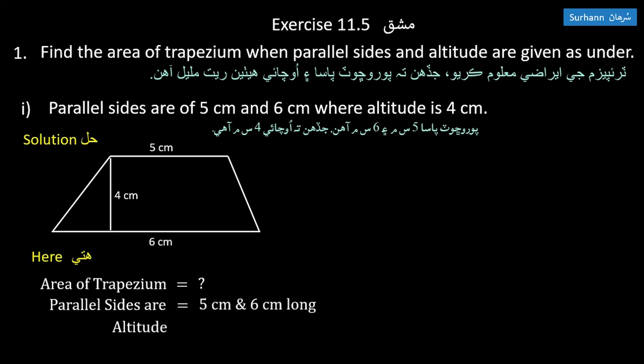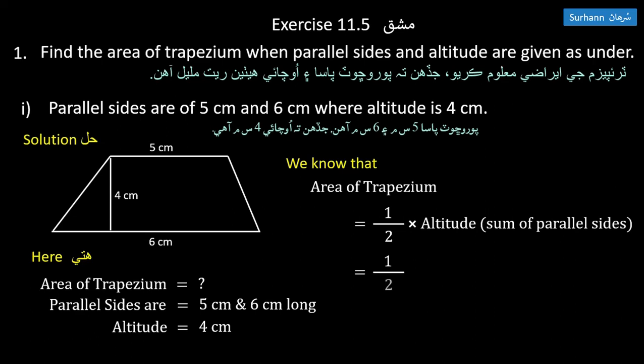The altitude is 4 cm. The area of trapezium formula is: area equals one-half times altitude times sum of parallel sides. I will put the values in the formula. The area of trapezium is calculated as one-half times 4 times (5 + 6).